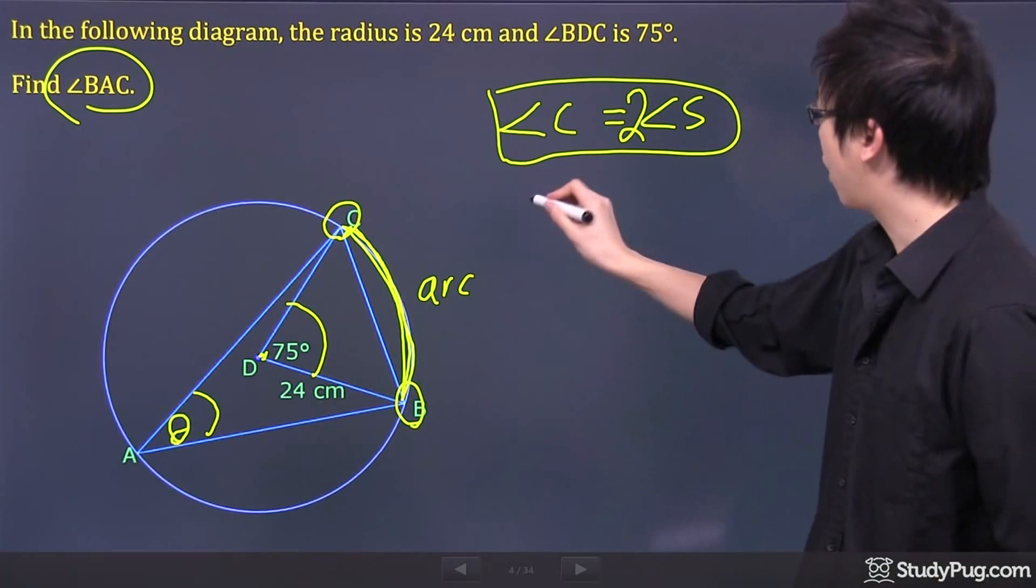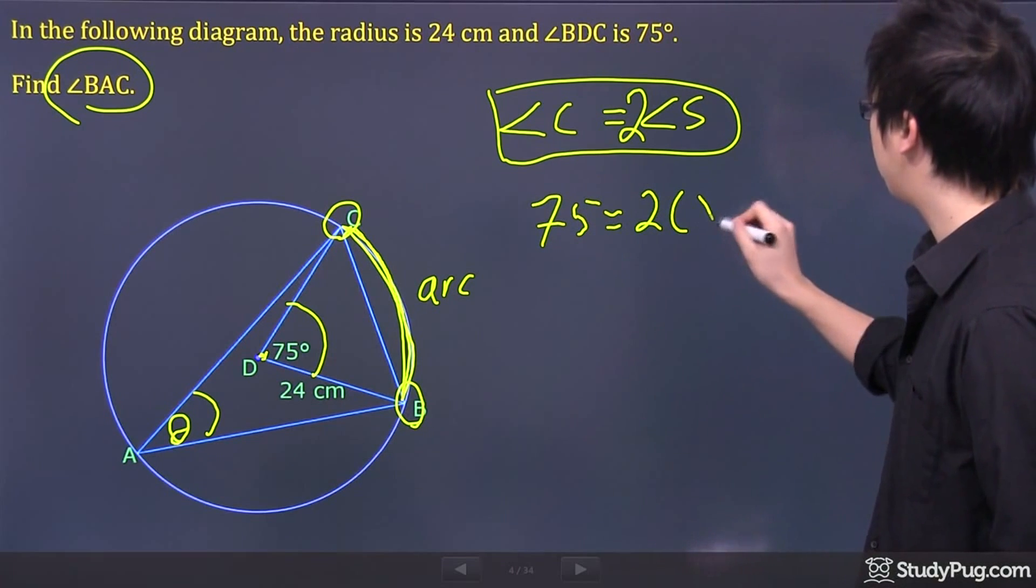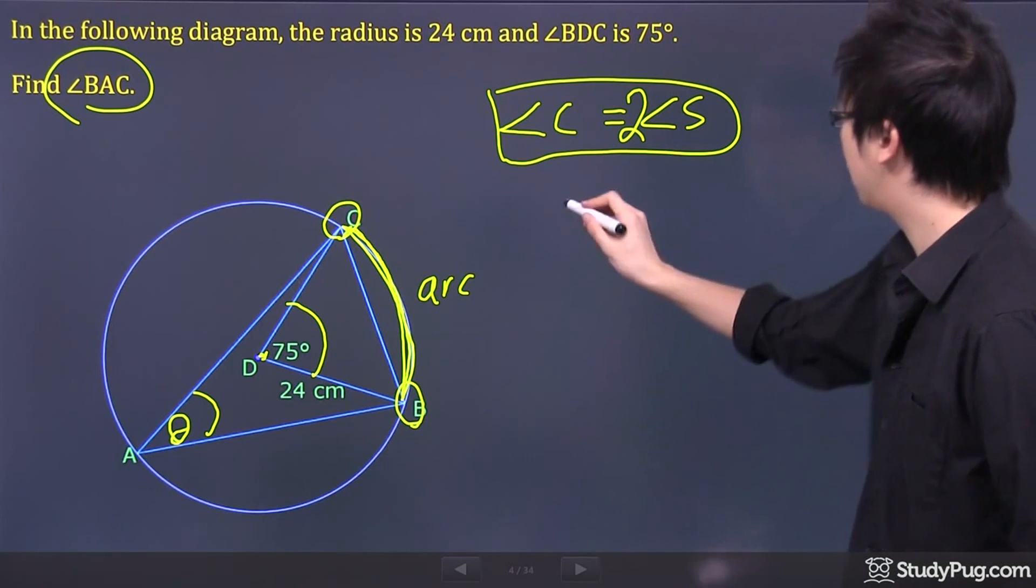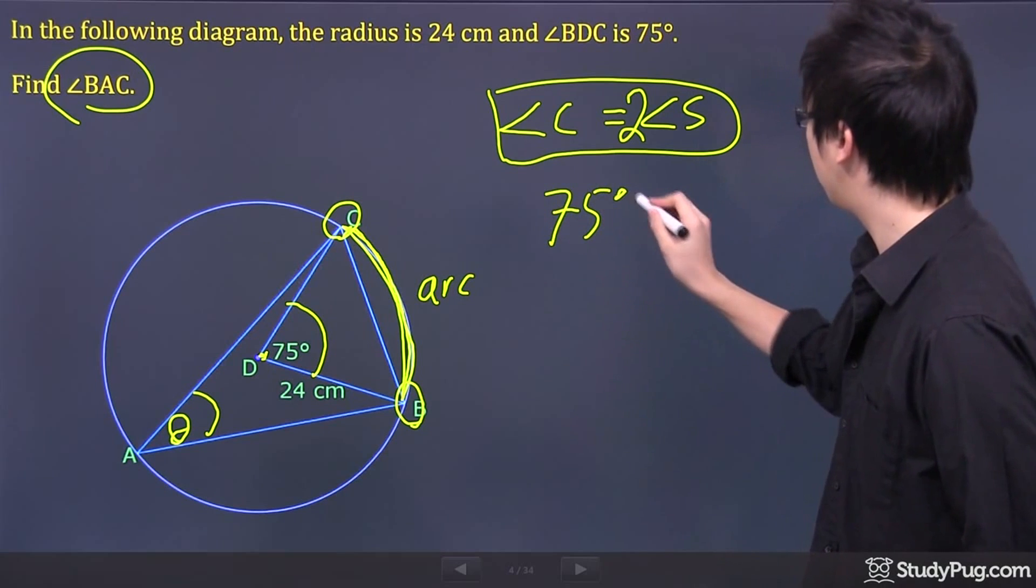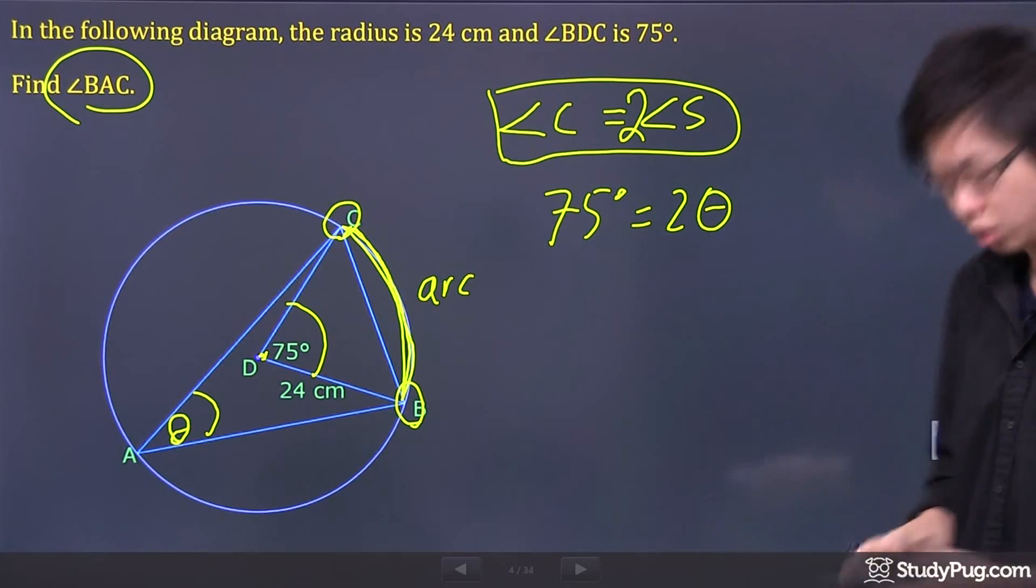So, if that's 75 over here, then basically, it's just two times the missing angle. Let me put down, 75 degrees, and there's your two theta that's missing.